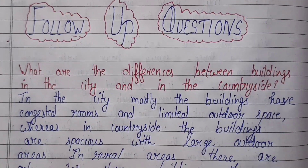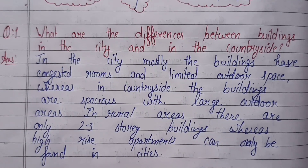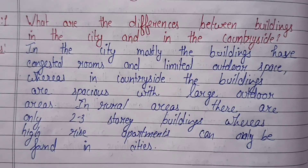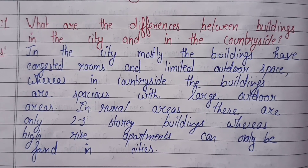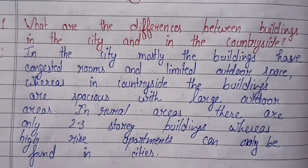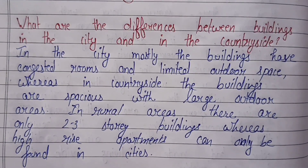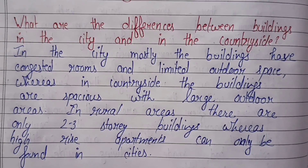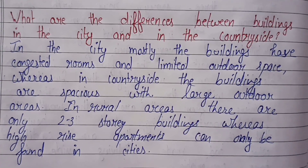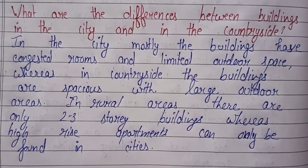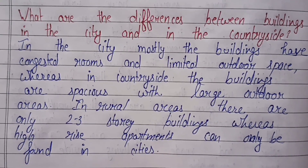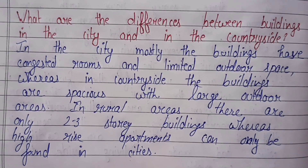The sample answer of this cue card is covered now. The first follow-up question is: What are the differences between buildings in the city and in the countryside? In the city, mostly the buildings have congested rooms and limited outdoor space. Whereas in the countryside, the buildings are spacious with large outdoor areas. In rural areas, there are only two or three story buildings, whereas high-rise apartments can only be found in cities.